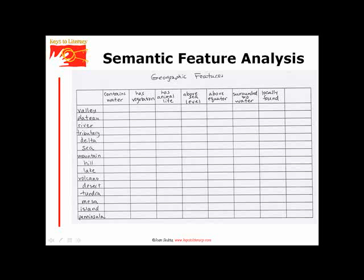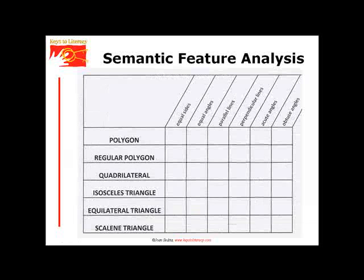For semantic feature analysis, a list of related words is provided along one axis of a chart, and different features are provided along the other. Students compare differences in word meaning by determining whether or not each feature is associated with the word. This semantic feature analysis is from a unit on geography. Here is a math example.